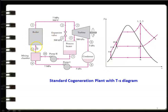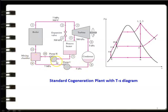In the standard cogeneration plant: the boiler produces high-pressure steam sent to both the turbine and the process heater via the expansion valve. The turbine exhaust is condensed, and the condensate is circulated back to the mixing chamber using pump 1. The outlet of the process heater is circulated back to the mixing chamber through pump 2. These two streams — both approximately saturated liquid — are mixed together and circulated back to the boiler.